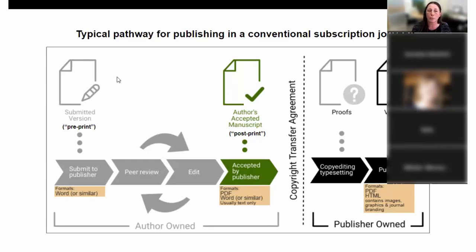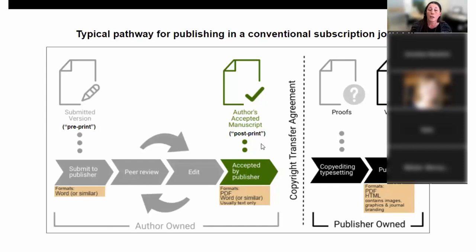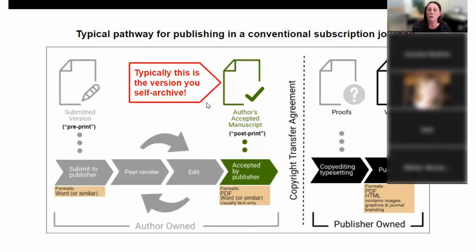There are different versions of your paper. The preprint or submitted version is what you submit to a journal before peer review. It then goes through peer review, edits, and revisions, and when it gets accepted, that's the author's accepted manuscript or post print. Then the publisher produces the version of record — the one we're typically familiar with, with the pagination and branding. The post print — author's accepted manuscript — is typically the version you would self-archive in a repository. Generally at the acceptance point, the publisher is asking you to sign a copyright transfer agreement, which you can negotiate.